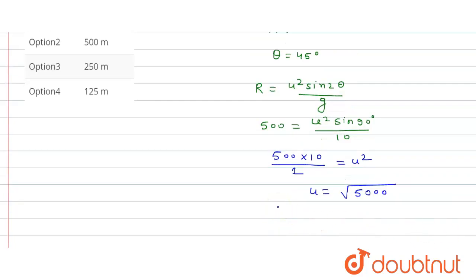Now we have to calculate the maximum height. So H max is equal to u squared sine squared theta upon 2g.